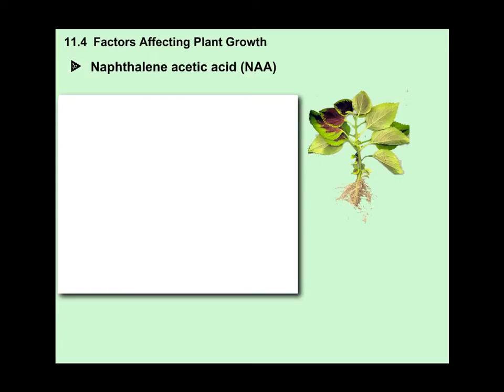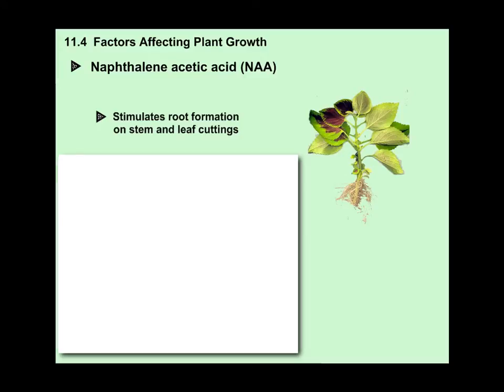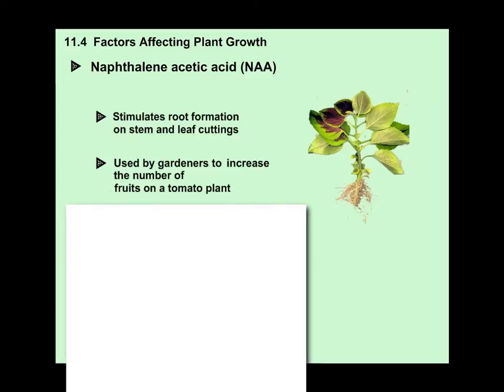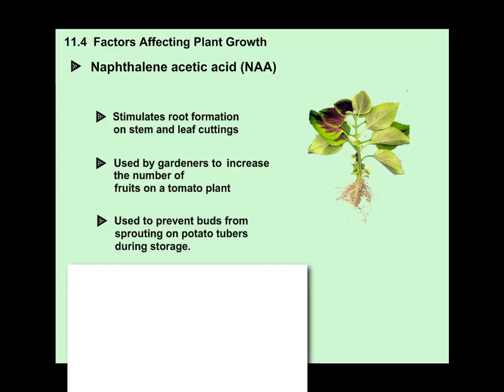Next on the list is naphthalene acetic acid — abbreviate as NAA. NAA is responsible for stimulating root formation on stem and leaf cuttings. It's used by gardeners to increase the number of fruits on a tomato plant, making it better to harvest. It is also used to prevent buds from sprouting on potato tubers during storage. If you've had potatoes sitting in your fridge a long time, they develop those eyes — NAA prevents that from happening.